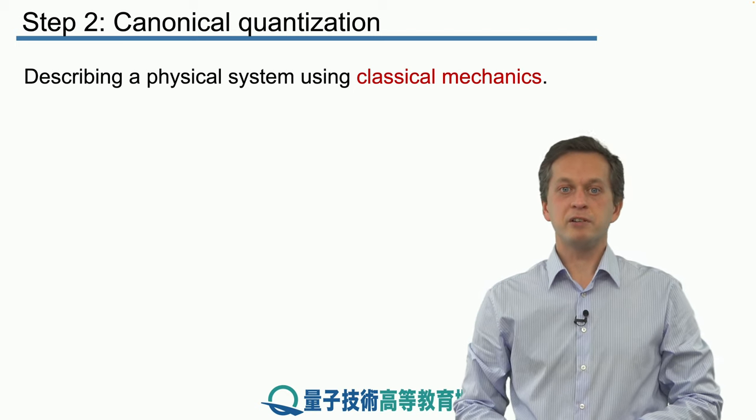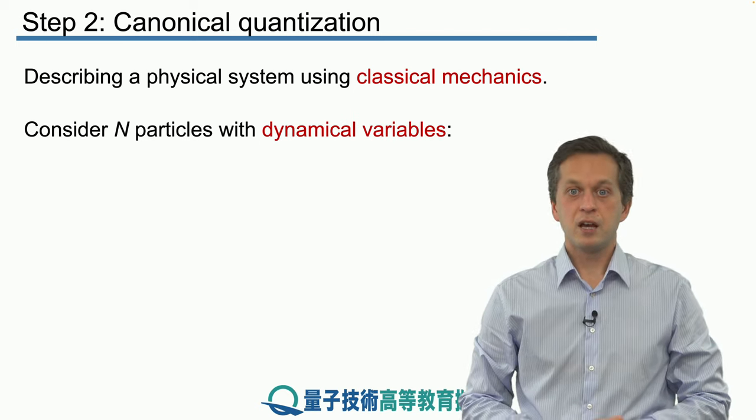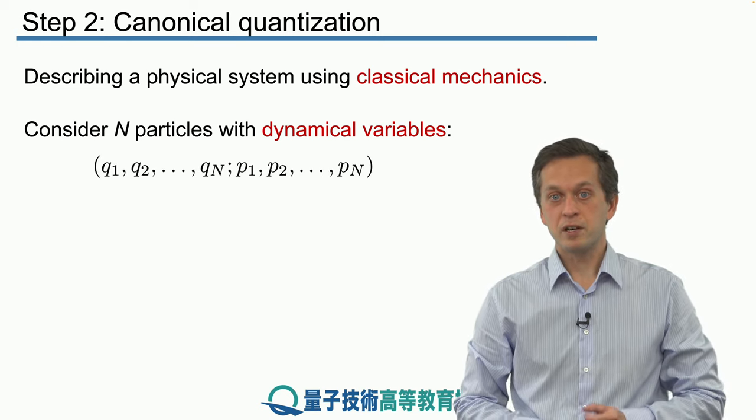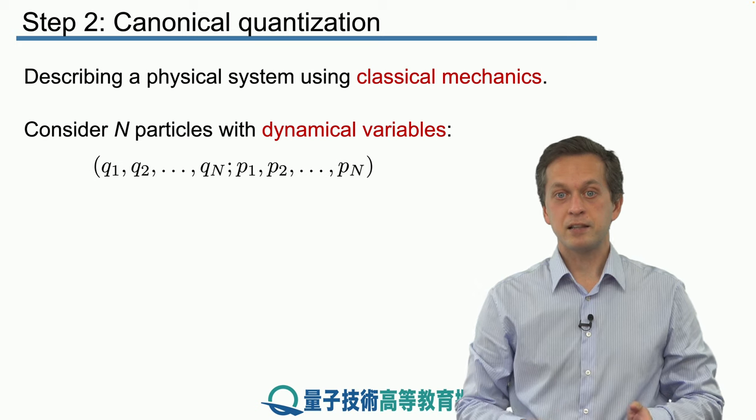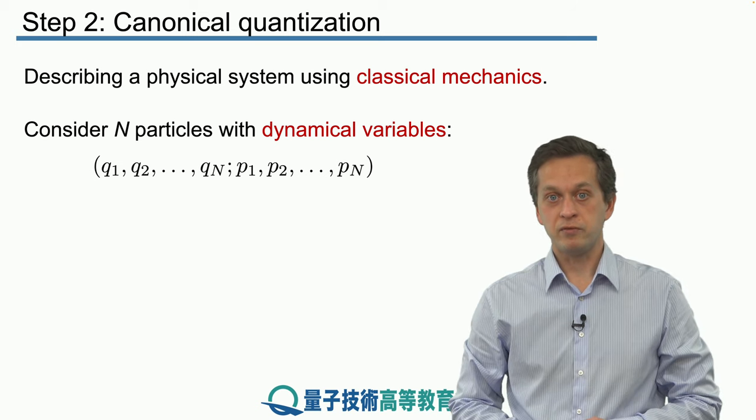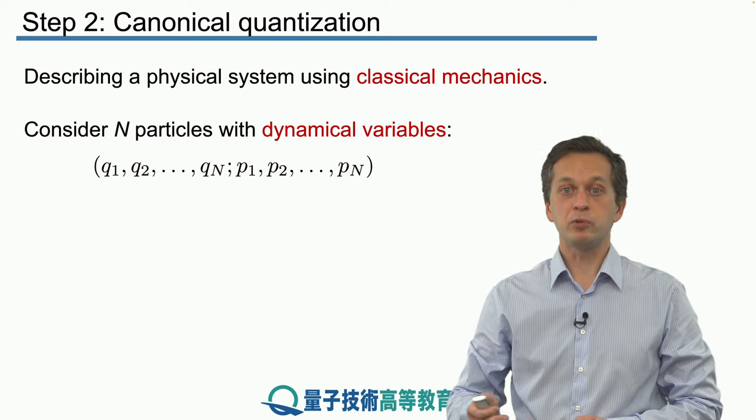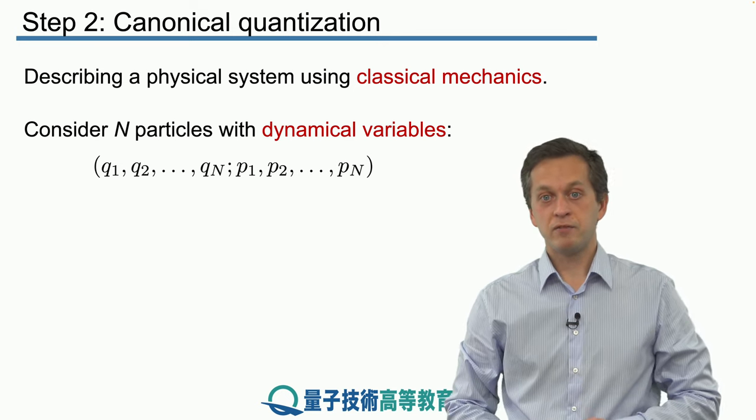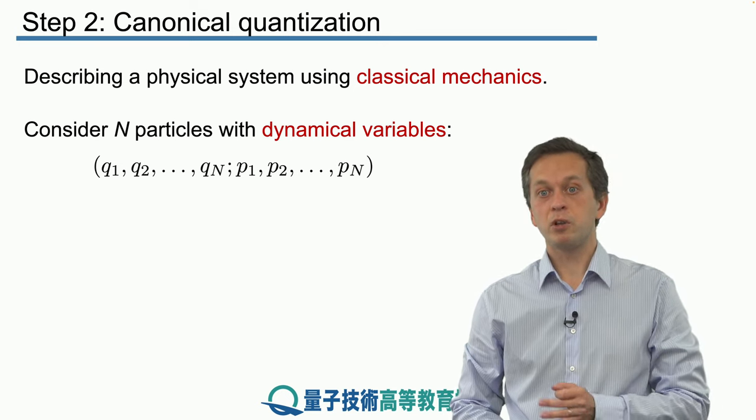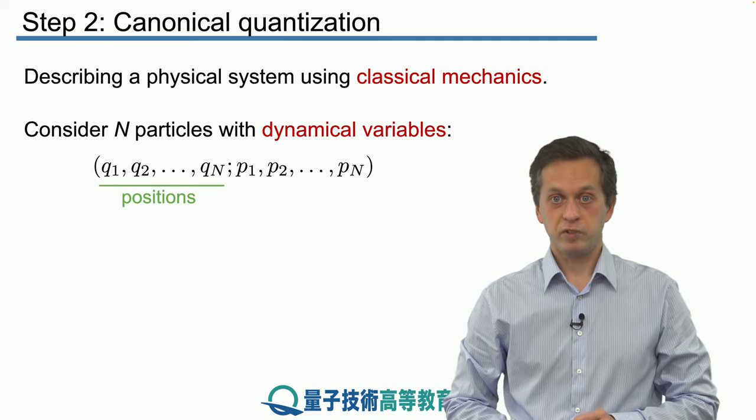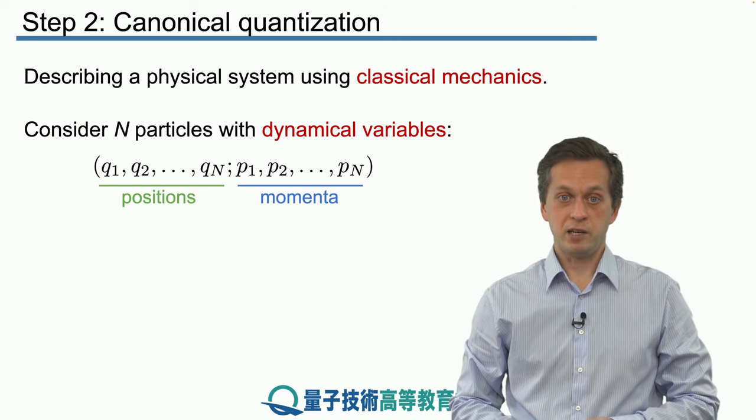Imagine that we have a general system of n particles. In classical mechanics, what we do is we write them out as a set of 2n dynamical variables. The first n variables are denoted q1, q2 up to qn, and the other n variables are p1, p2 all the way up to pn. The q's are known as the positions of the particles, while the p's are known as the momenta.